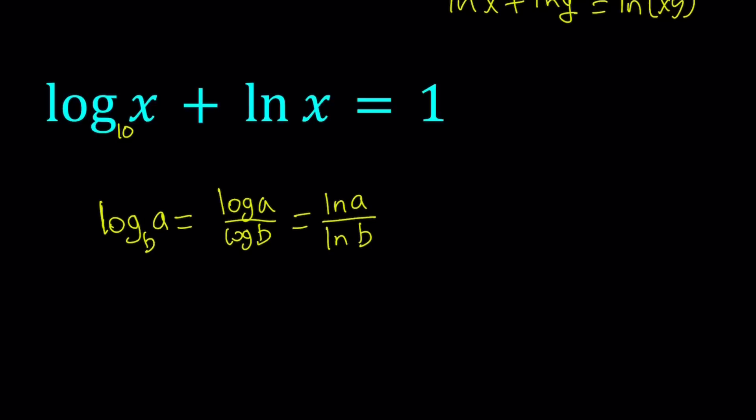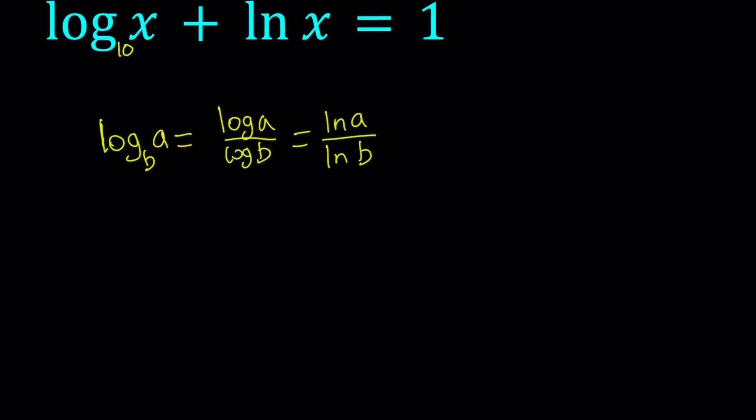So using that, even though this equation looks like, how am I going to combine these, right? Log x plus ln x do not combine as is. But if you turn the log x into ln x something, then you'll be able to combine them. So here's what we're going to do. We're going to write log x with base 10 as ln x over ln 10.